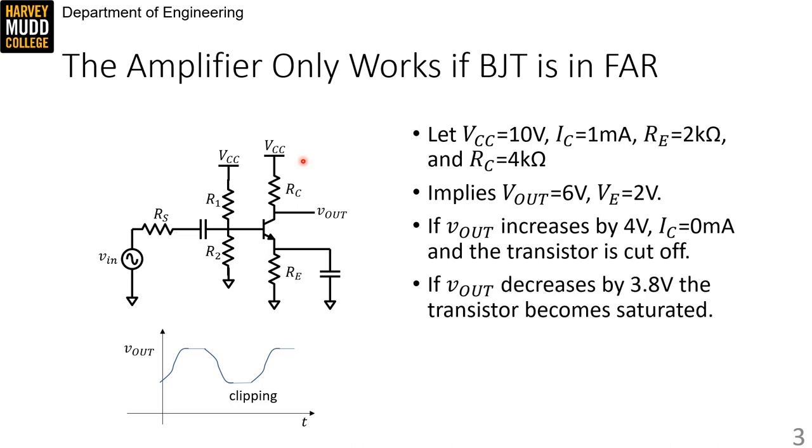On the other hand, decreasing VOUT implies that IC has increased. So we don't have to worry about cutting off the transistor as VOUT goes lower. However, if VOUT reaches 2.2 volts, one VCE_SAT above our emitter voltage, then we no longer have VCE_SAT across the transistor, which causes it to enter the saturation region. This minimum acceptable voltage of 2.2 volts we call the minimum output voltage, or VO_MIN. And you'll note that VO_MIN is 3.8 volts below our large signal VOUT of 6 volts.